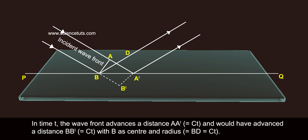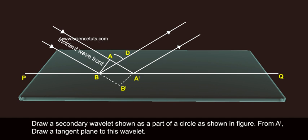In time T, the wave front advances a distance AA' equals to CT and would have advanced a distance BB' equals to CT. With B as center and radius equals to BD equals to CT, draw a secondary wavelet shown as a part of a circle as shown in figure.